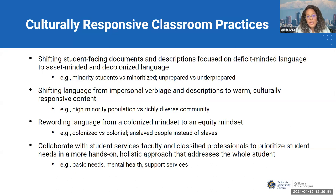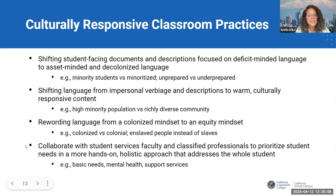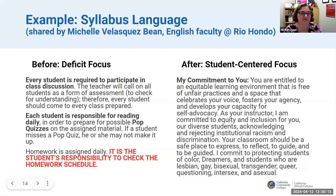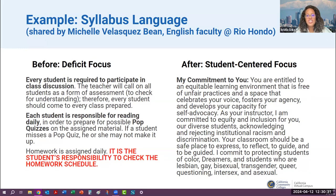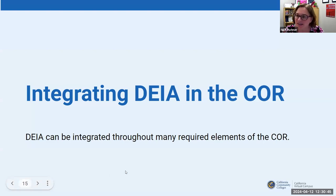Thinking truly about the whole student involves pointing out services related to mental health, basic needs, and food services on campus. It really is taking a local approach depending on where you're located and what services your campus offers. The slides will be available along with a recording of this presentation in a couple of weeks on the CBC website. Hopefully you're getting a sense that words matter—now we're going to talk about the words specifically in the COR and how they translate to DEIA.